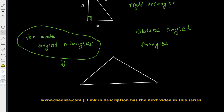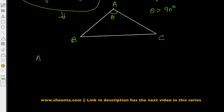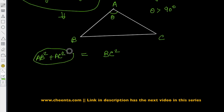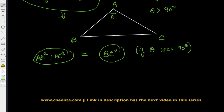Let's say we have triangle ABC where the angle at A is theta, and theta is greater than 90 degrees. We are interested to know what we can say about AB² + AC² and their relationship with BC². Notice that if it were a right angle triangle — if theta were 90 degrees — there would be equality. But theta is greater than 90 degrees. Is the left-hand side greater or smaller than BC²?